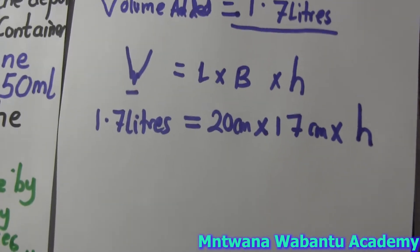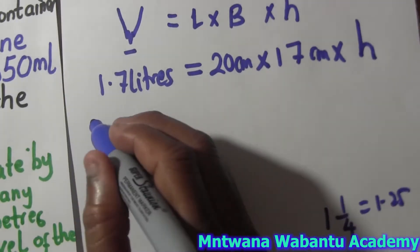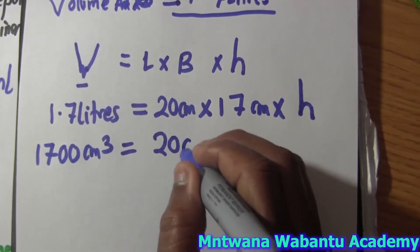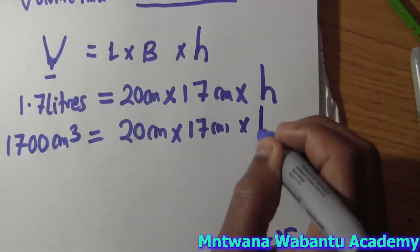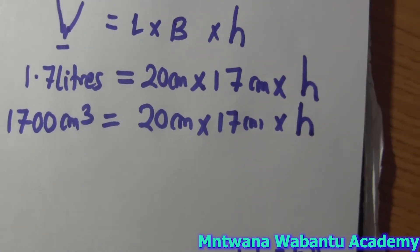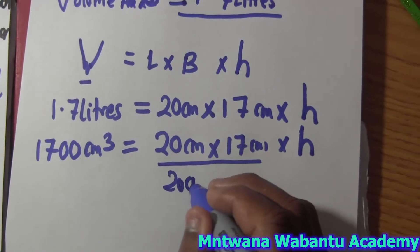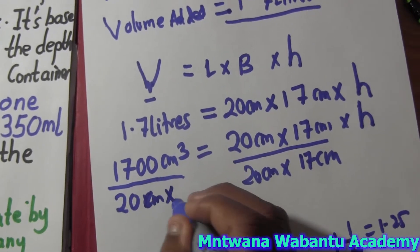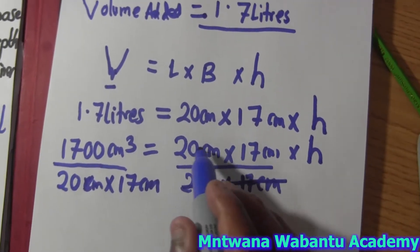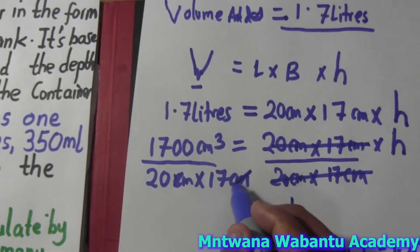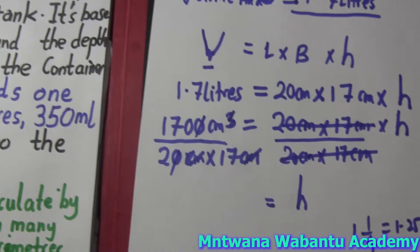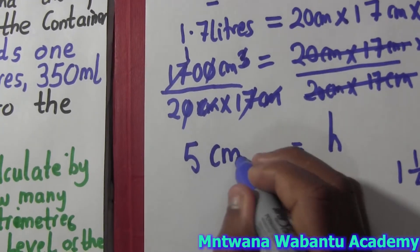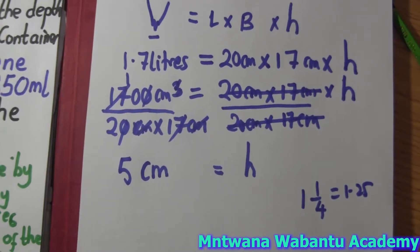Since the volume is in liters, we need to convert to cubic centimeters. Multiply by 1000: 1.7 liters × 1000 = 1700 cubic centimeters. Now: 1700 = 20 × 17 × height. Divide both sides by 20 and 17: 20 cancels, 17 cancels. We get height = 1700 ÷ (20 × 17) = 1700 ÷ 340 = 5 centimeters.